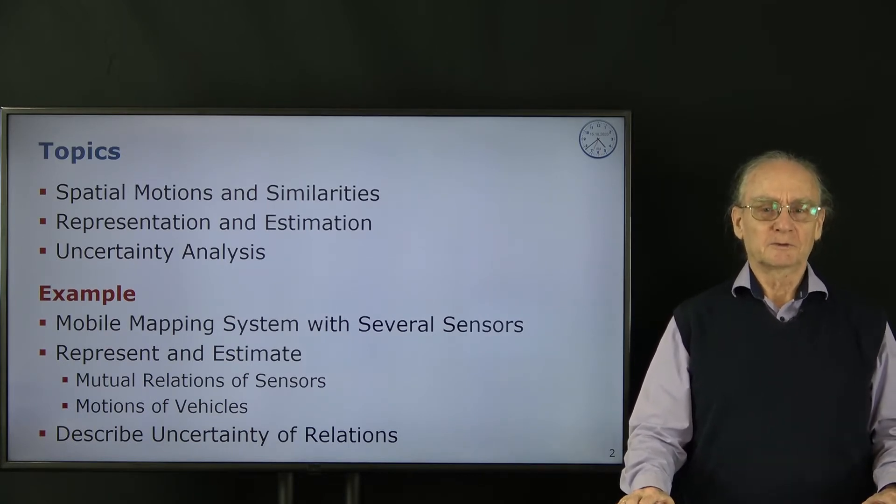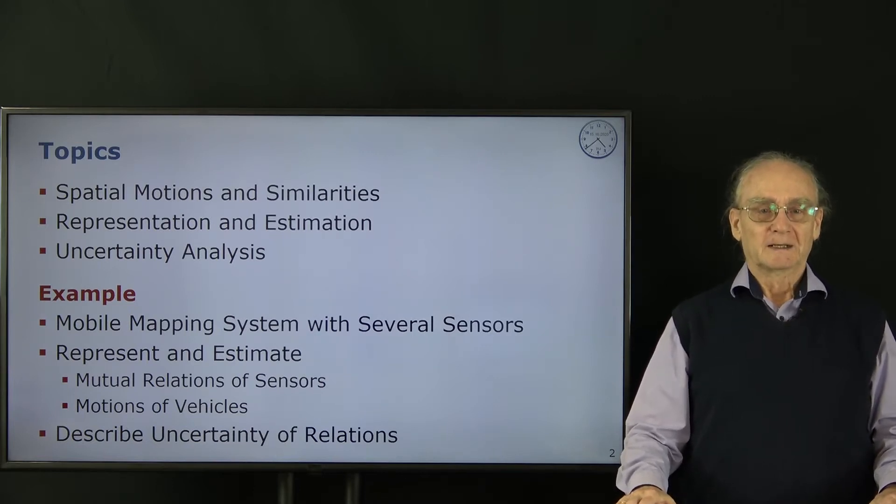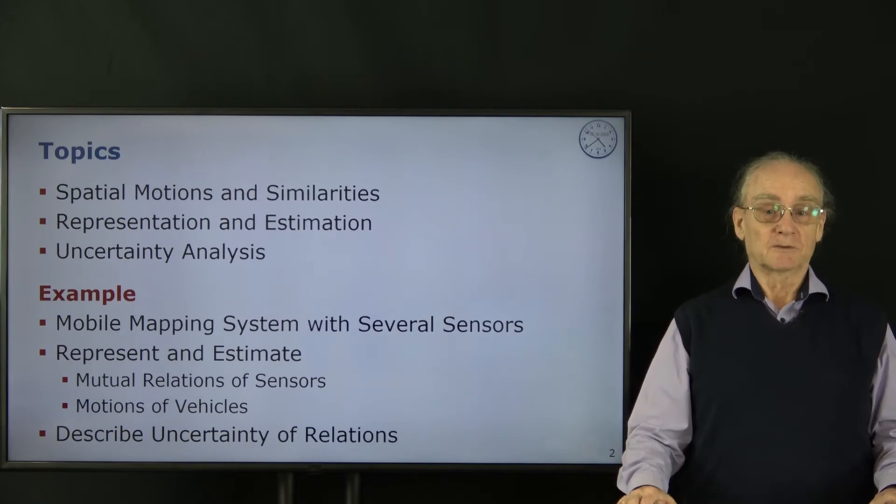There are a few examples which I will elaborate more soon. We have mobile mapping systems which have many sensors. We have to represent the mutual relations of the sensors and the motion of the vehicle and describe the uncertainty of these relations.